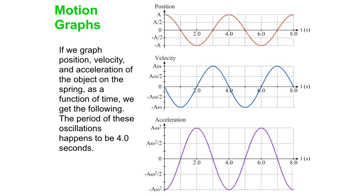We're plotting position, velocity, and acceleration of an object on a spring as it oscillates back and forth. These are all plotted as a function of time. You can see here that the period of the oscillation, which is the time for one complete oscillation, is four seconds. You can get that off any one of those three graphs.